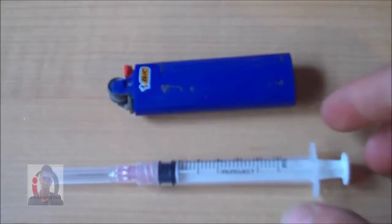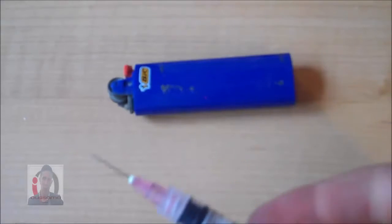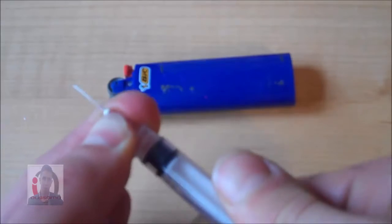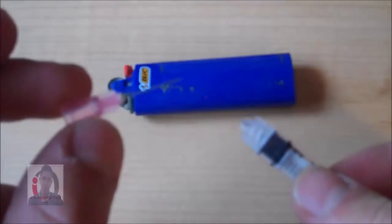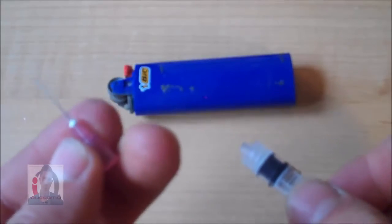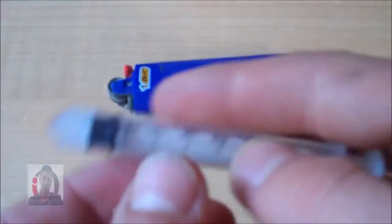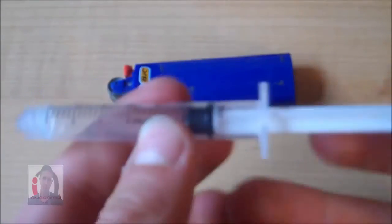To make the actual flamethrower, grab your needle and take off the safety cap. Then carefully, depends on the model, but on mine you can just unscrew the top and the actual pointy part will come off. So you're going to safely dispose of this in a sharps container or something. And of course, use an unused needle because if not that would be very unsanitary and quite gross.